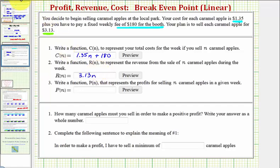And now to find the profit function, P(n), profit, P(n), is equal to the revenue function, R(n), minus the cost function, C(n).